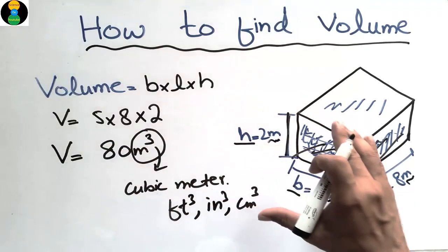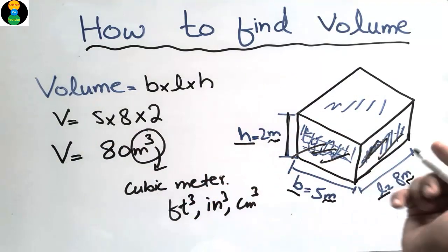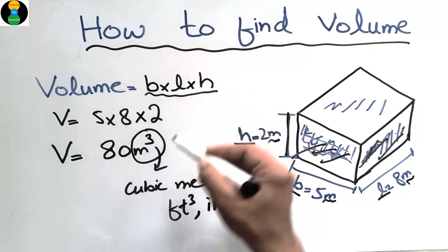This was today's topic about how to find the volume. You can also find the volume of any type of object if you find these three dimensions. You just multiply these three with the unit of cube, so you will get the volume of any object.